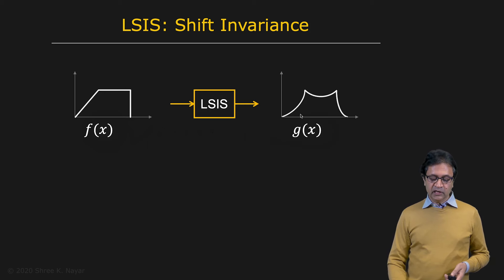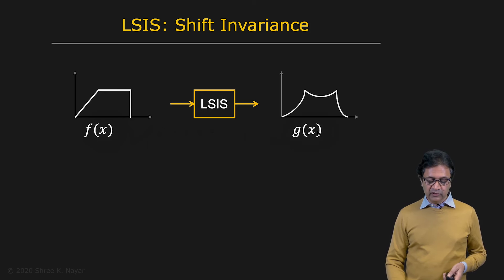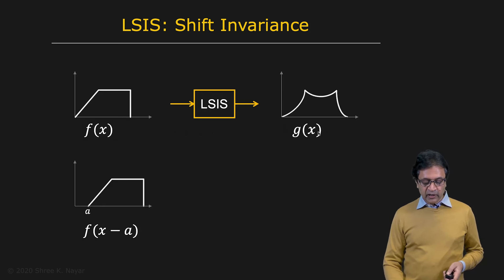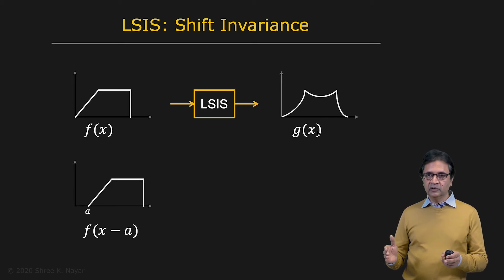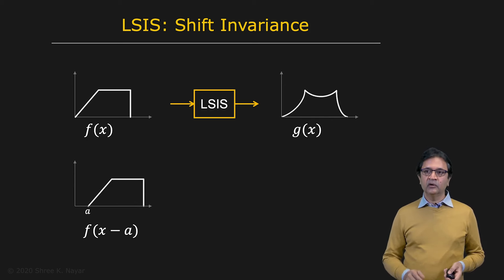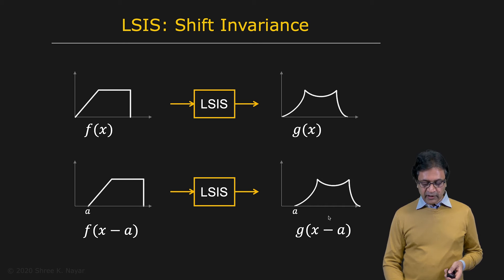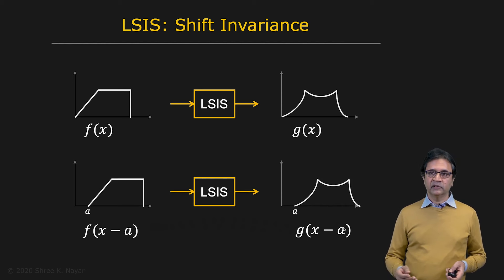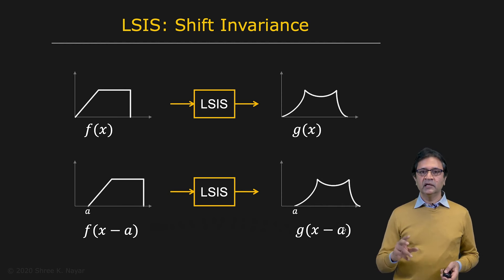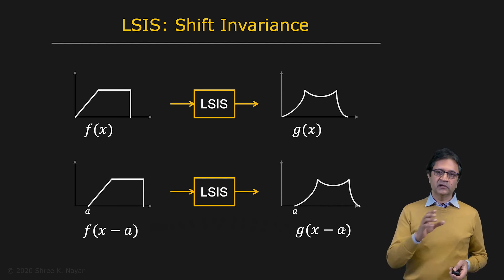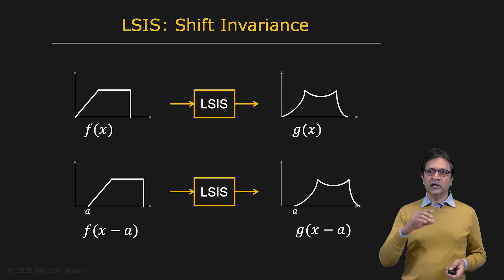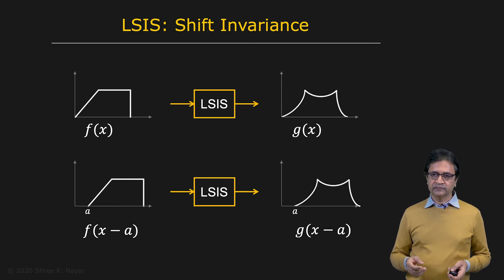And what you get is the output g of x. If you happen to shift the input by a, then the output should also be shifted by a. If this condition is satisfied, then you have shift invariance. And any system that satisfies linearity and shift invariance is a linear shift invariant system.